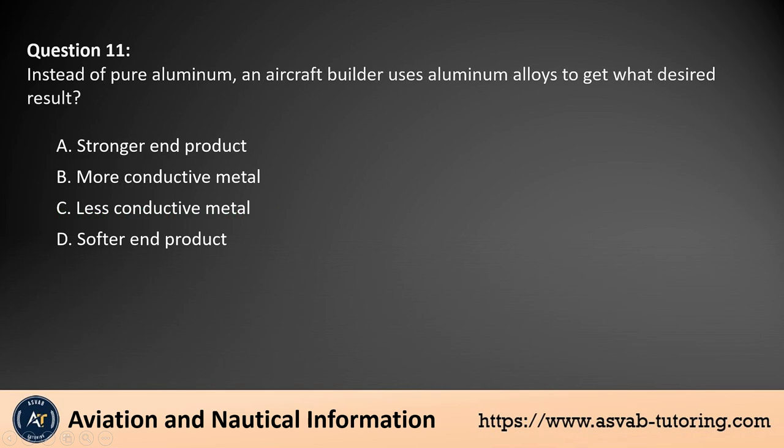Question 11. Instead of pure aluminum, an aircraft builder uses aluminum alloys to get what desired result? A. Stronger end product. B. More conductive metal. C. Less conductive metal. D. Softer end product.